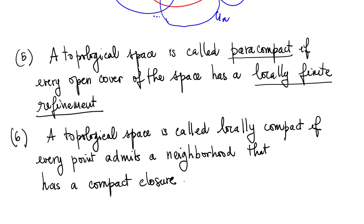Next, the topological space is called paracompact if every open cover of the space has a locally finite refinement as defined earlier. The topological space is locally compact if every point admits a neighborhood that has compact closure.